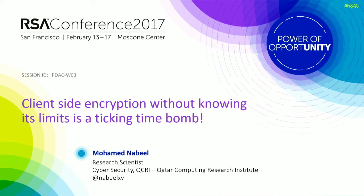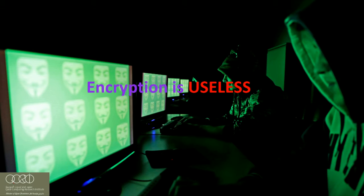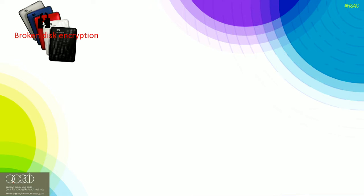I've been analyzing failures in cryptographic software and identifying why they are failing in practice. I can tell you with 100% certainty: encryption is useless unless you know where it lives and how it lives. Two years back, researchers found that Western Digital disk encryption is completely useless because of numerous bugs — a very weak RNG and weak password key derivation function that allowed attackers to easily grab the keys and decrypt the whole disk.